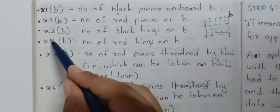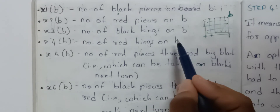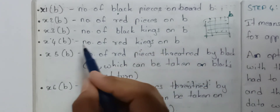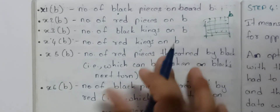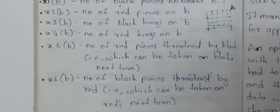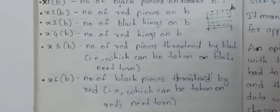X2 of b is the number of red pieces on the board. X3 is the number of black kings on the board. X4 is the number of red kings on the board. A king is when a piece reaches the opposite end and can play in the backward diagonal direction.